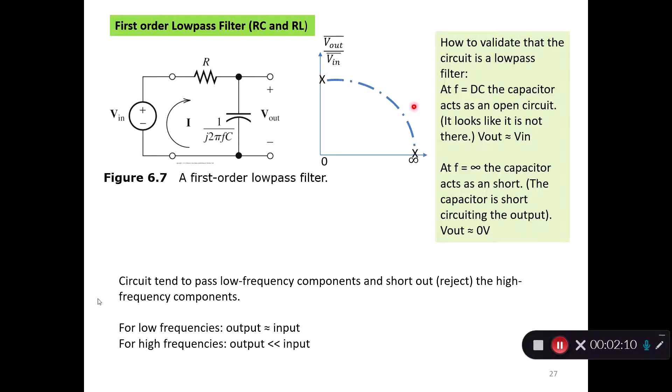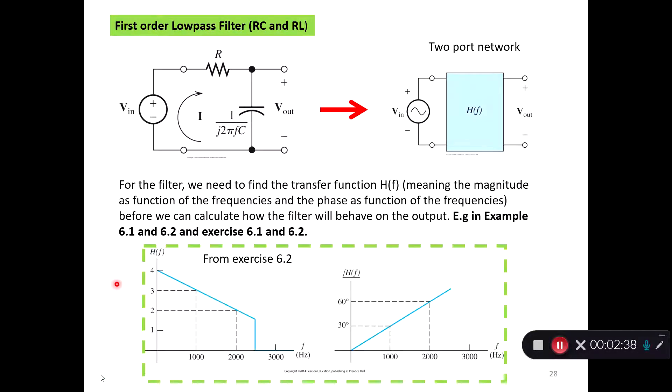Based on these two points, we can make this approximation that it actually looks like a low-pass filter. Then we can start our analysis of the circuit further, because we have a good clue that this is actually a low-pass filter. This is our first step on an analysis.